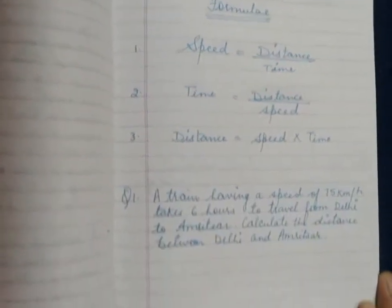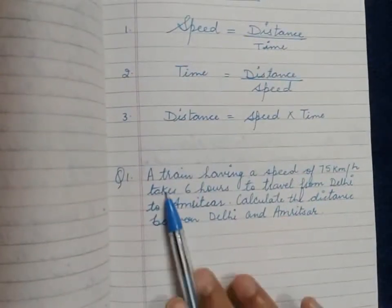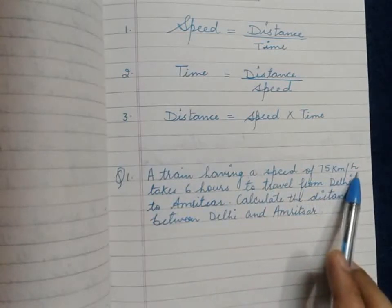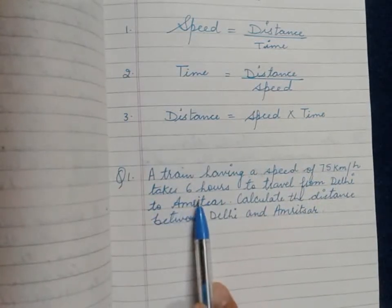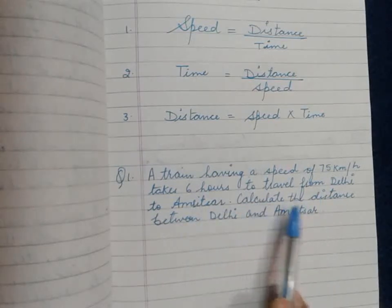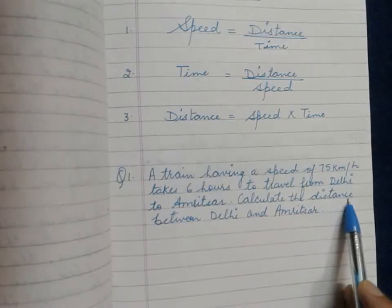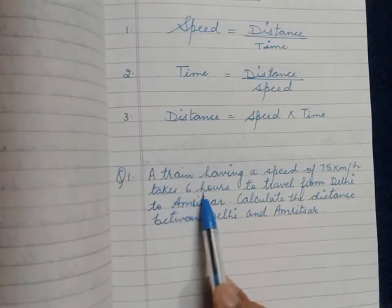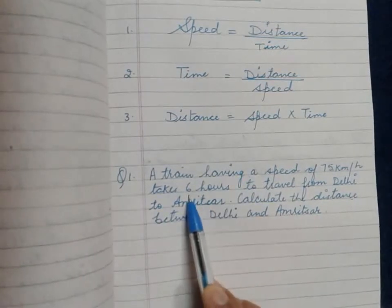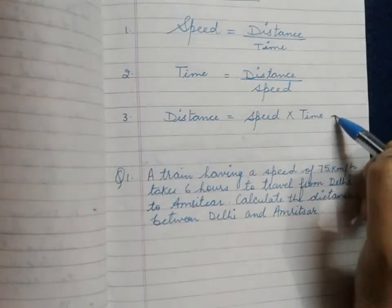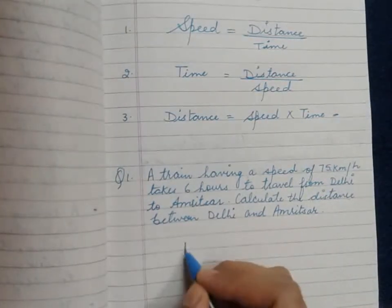First numerical: A train having a speed of 75 kilometers per hour takes 6 hours to travel from Delhi to Amritsar. Calculate the distance between Delhi and Amritsar. Speed is given as 75 km/hr, time is given as 6 hours, and we have to find the distance. So first we write the formula for distance: distance is equal to speed into time.